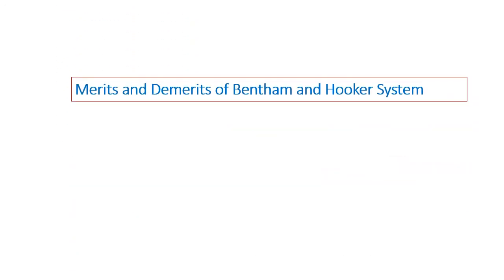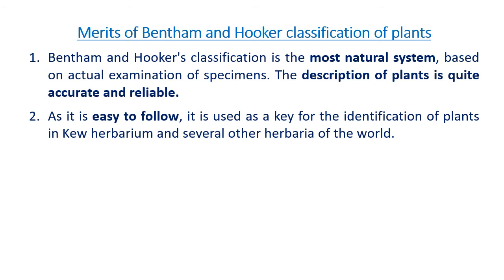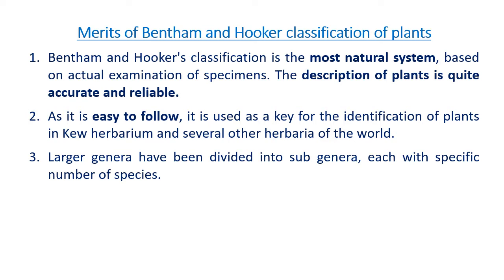First, the merits of the Bentham and Hooker system. Bentham and Hooker's classification is the most natural system, based on actual examination of specimens. The description of plants is quite accurate and reliable. As it is easy to follow, it is used as a key for the identification of plants in Kew Herbarium and several other herbaria of the world. The larger genera have been divided into subgenera, each with a specific number of species.